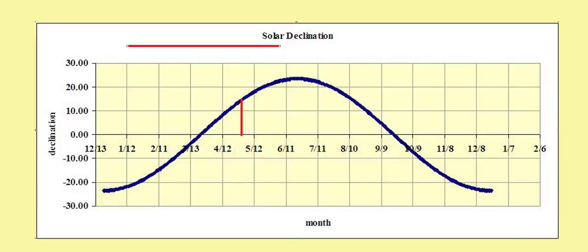Here's a graph showing the solar declination. On the y-axis is the declination. It gets up to a maximum of 23 and a half degrees north latitude.